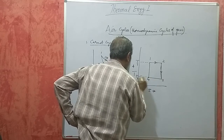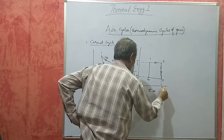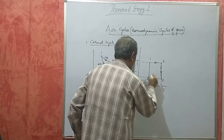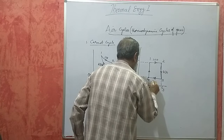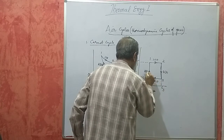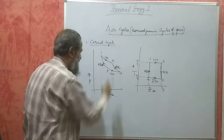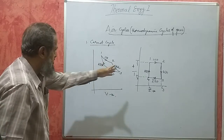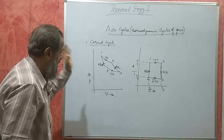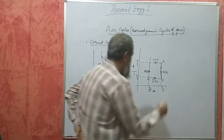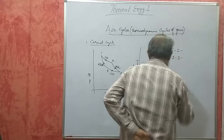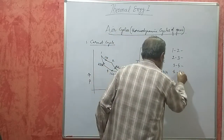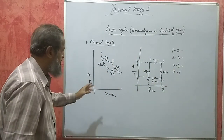The TS diagram for the Carnot cycle is a rectangle. The isothermal processes (1-2 and 3-4) are horizontal lines at temperatures T1 and T3. The adiabatic processes (2-3 and 4-1) are vertical lines since entropy remains constant. Entropy values S1 and S4 are the same, and S2 and S3 are the same. The four processes are: isothermal heating (1-2), adiabatic expansion (2-3), isothermal cooling (3-4), and adiabatic compression (4-1).